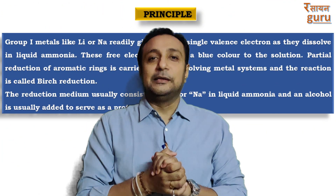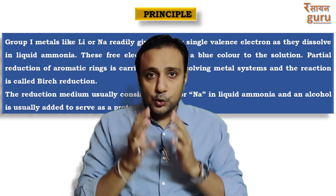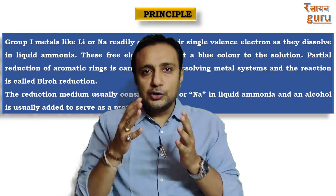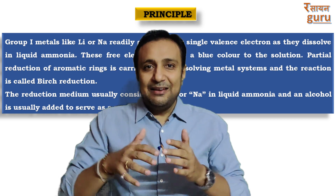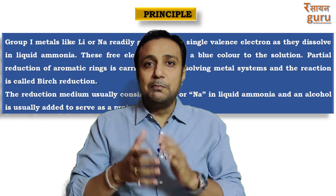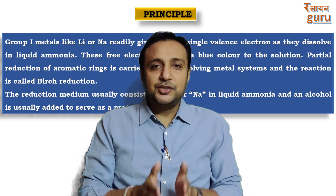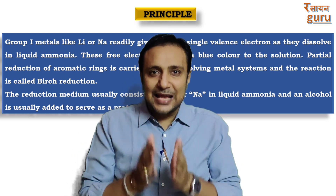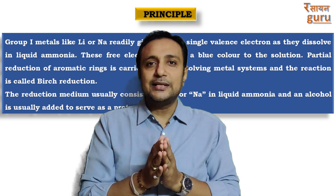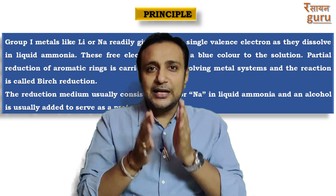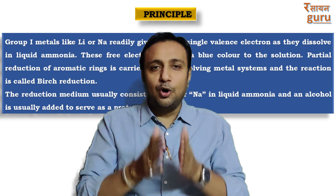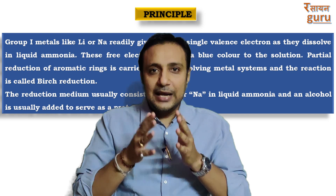Next is the principle. In Birch reduction, lithium or sodium metal is used. Group one metals like lithium or sodium readily give a valence electron when dissolved in ammonia, and when dissolved in ammonia, they impart a blue color. Partial reduction of the aromatic ring is carried out by dissolving this metal system, and the whole reaction is known as Birch reduction. The reduction medium usually consists of lithium or sodium in liquid ammonia, and an alcohol is usually added to serve as a proton source.